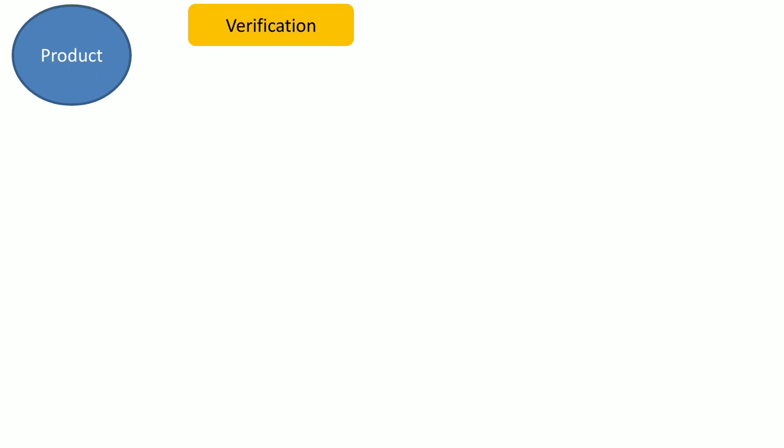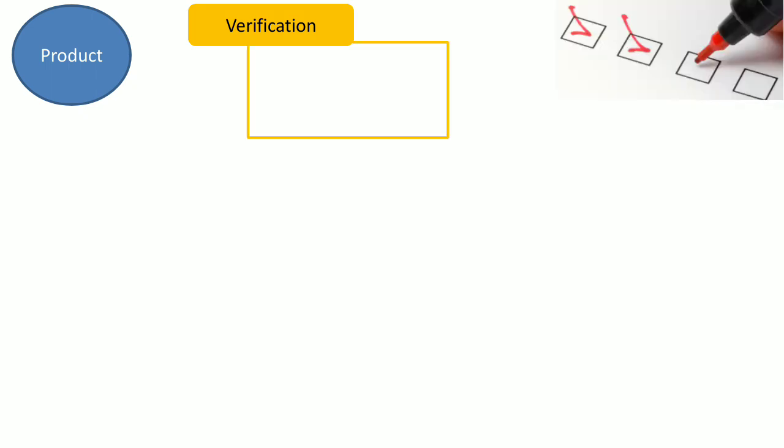Now, this is a product, and verification is basically carried out at the end of the product development life cycle. We basically check whether this product meets the technical specification and design, which was earlier formulated with the help of the user's requirements. So in this process, we check whether we have developed the product in the right manner as per the technical specification or user requirement gathered earlier.